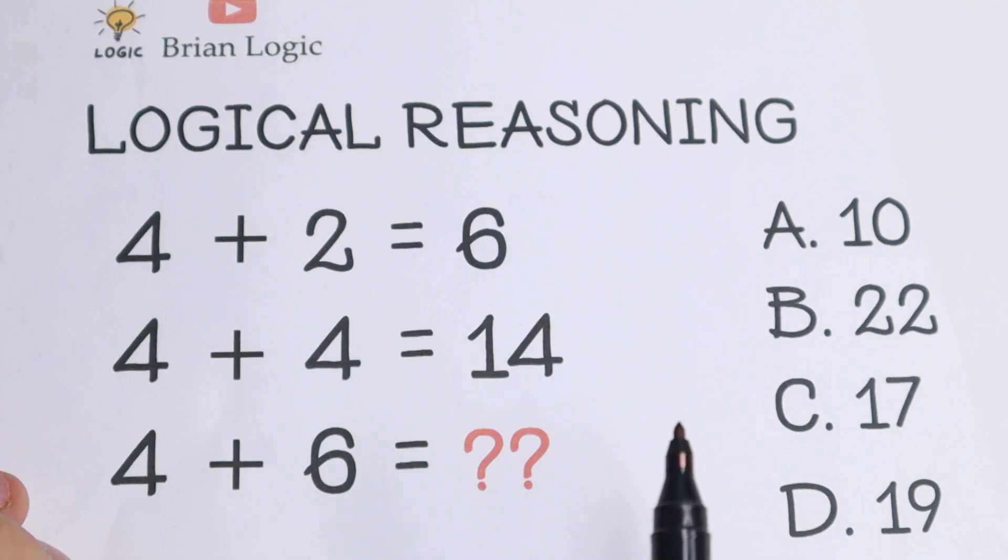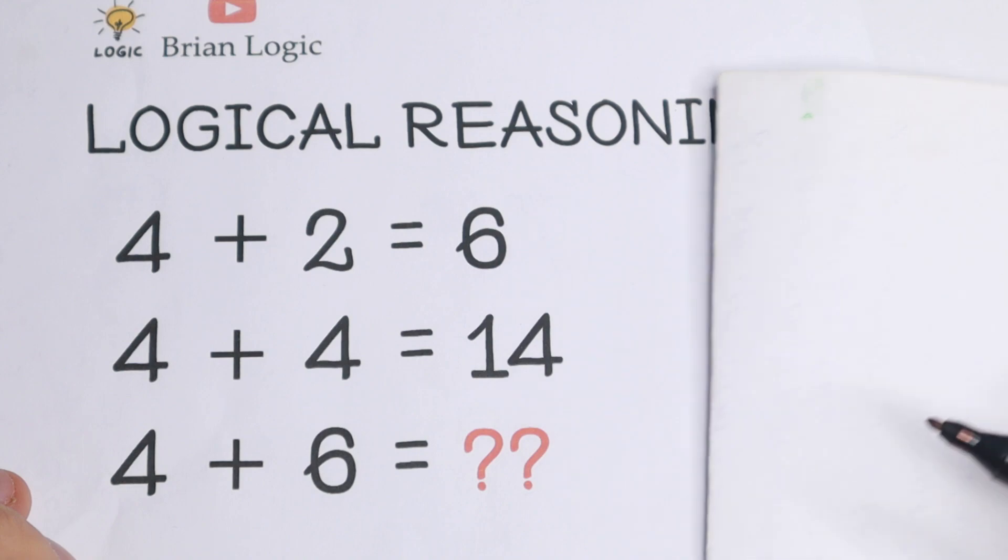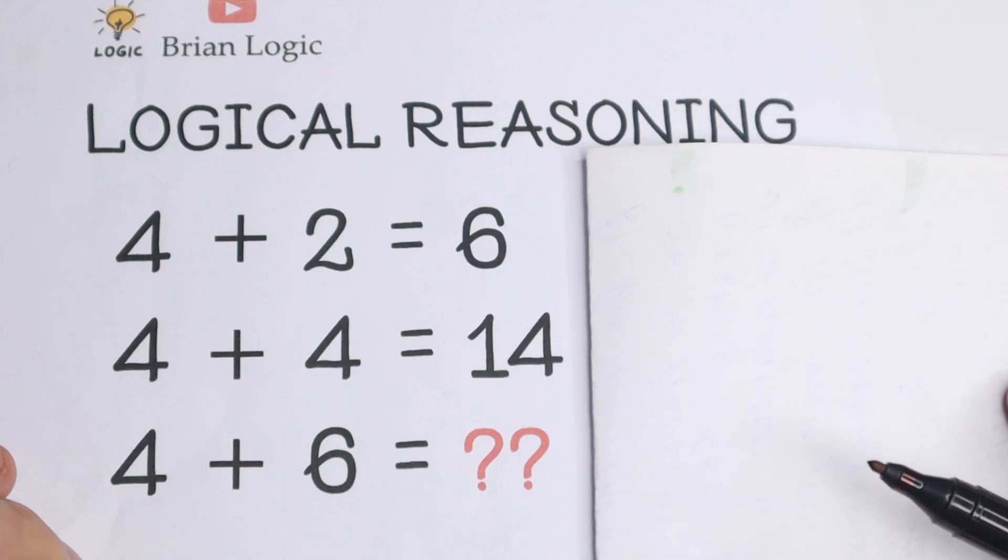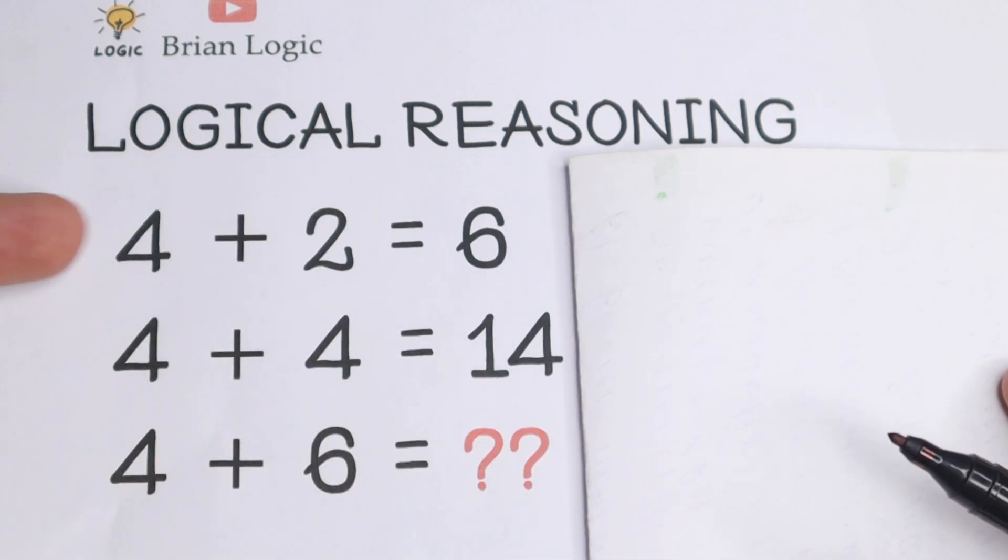After 20 seconds, we will check your knowledge. So let's try to find the pattern between all of these expressions. Take a look, we have 4 plus 2 equals 6. We know that 4 plus 2 equals 6 is correct, but what about the second row? We have 4 plus 4 equals 14, which is not correct. So let's find the pattern between all of these numbers.